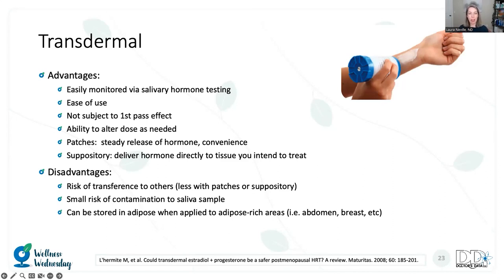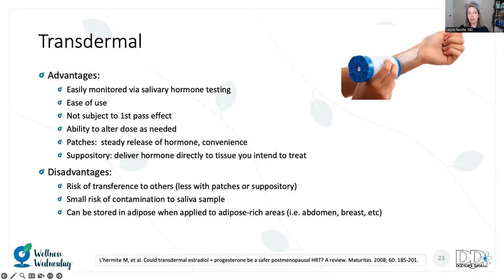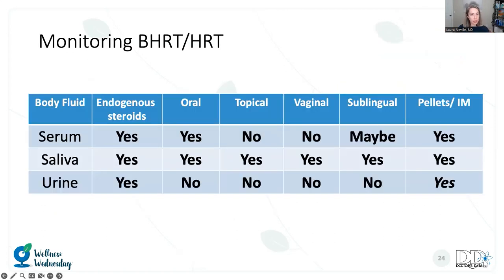Another disadvantage of transdermal delivery is unpredictable release when hormone is stored in adipose tissue. Transdermal steroid hormones are lipophilic and pool in fatty tissue — when applied over the abdomen, buttocks, thighs, or inner arm, the hormone gets released in inconsistent amounts. If salivary levels look unexpectedly low or high, always ask where the patient is applying it. Many over-the-counter bioidentical prescriptions say to apply to fatty areas or breast tissue — I do not do that. I have patients apply to thin-skinned areas: inner wrist, tops of feet, backs of knees — directly to small capillaries, not adipose tissue.